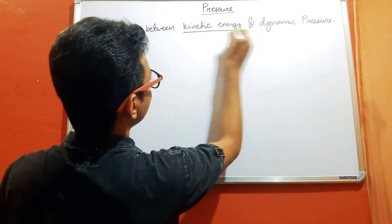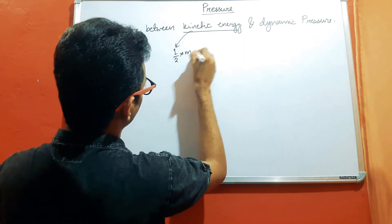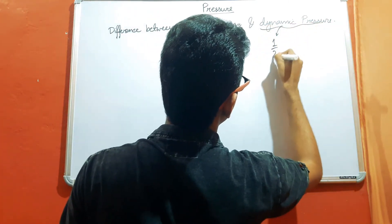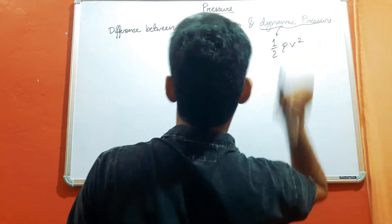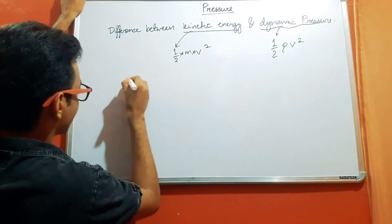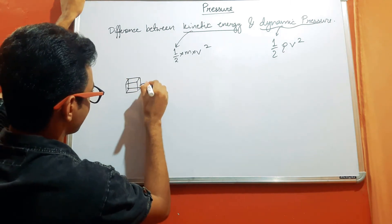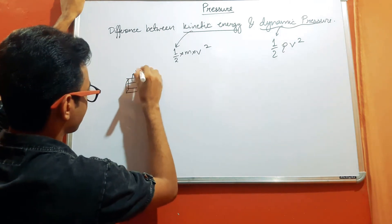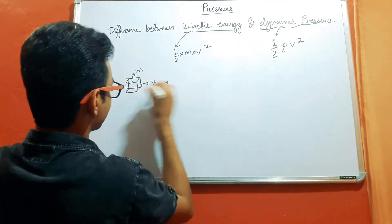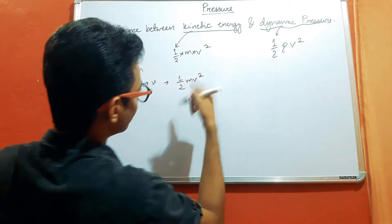Kinetic energy is given by half into mass into velocity square, and dynamic pressure is given by half into density into velocity square. When some particle is moving with some velocity v and the mass is m, then because of this movement, the kinetic energy possessed by this mass is half into mass of this particle into v squared.